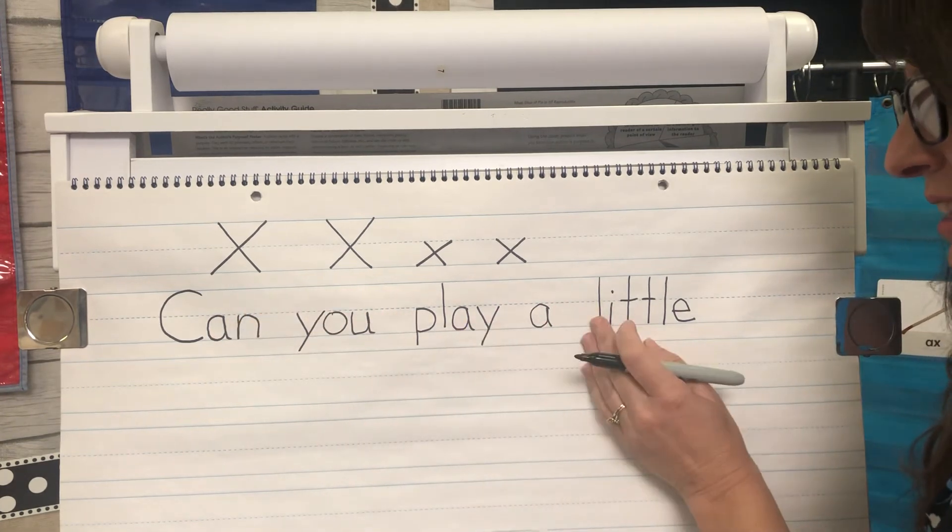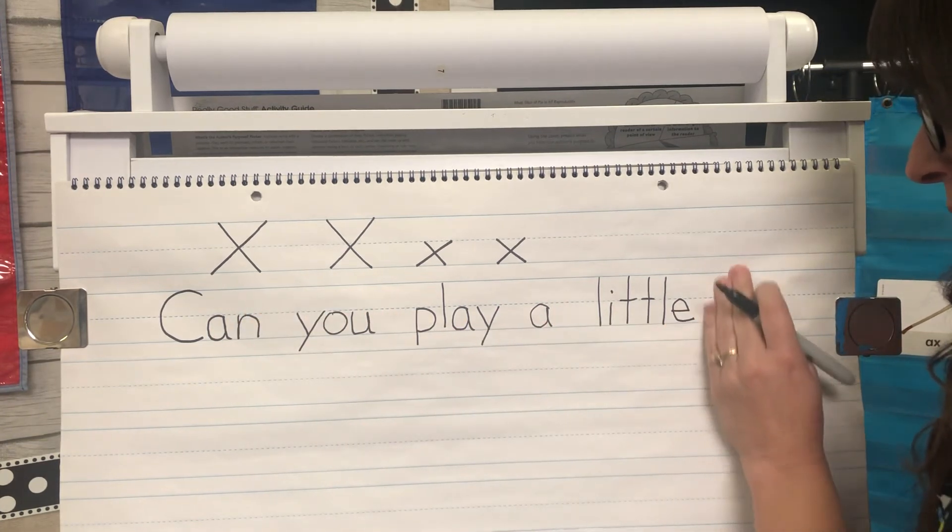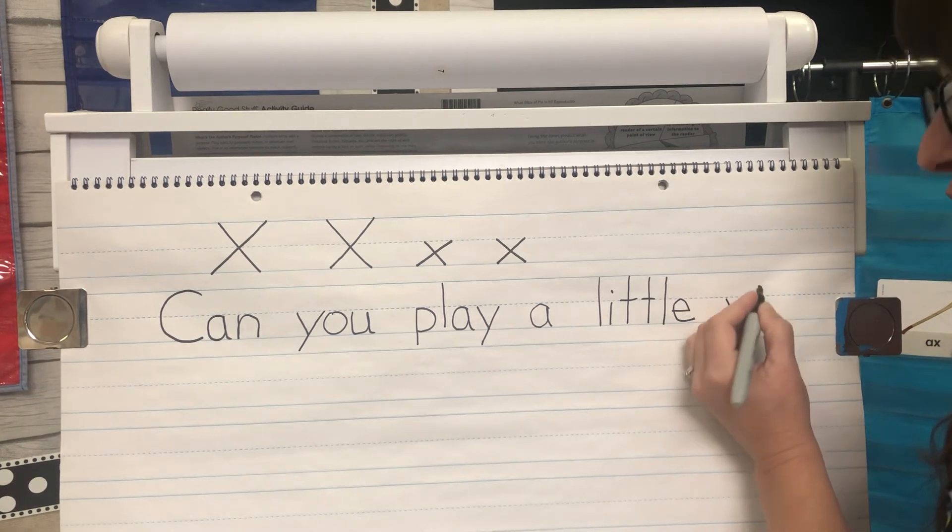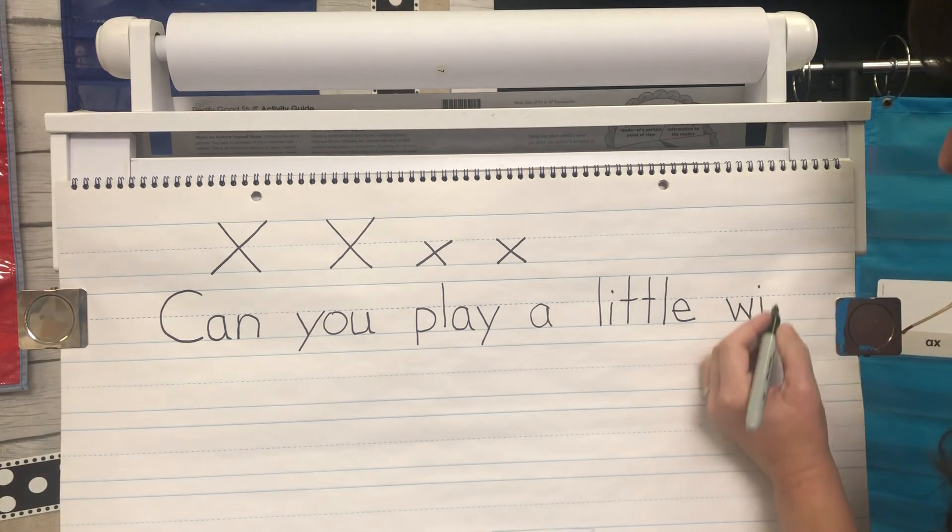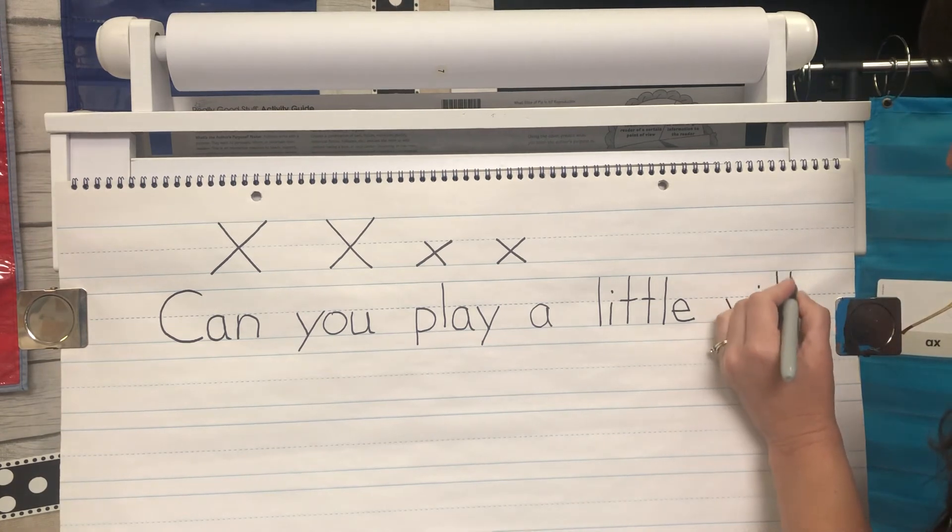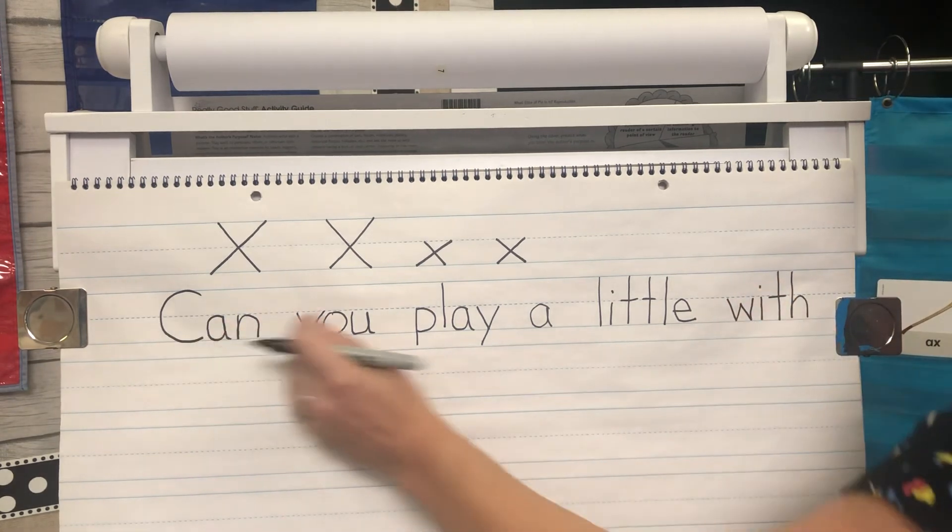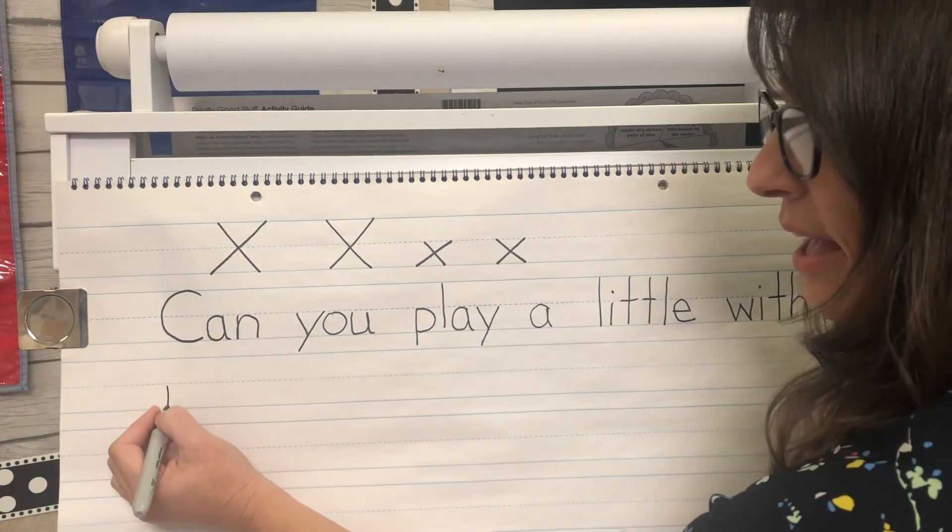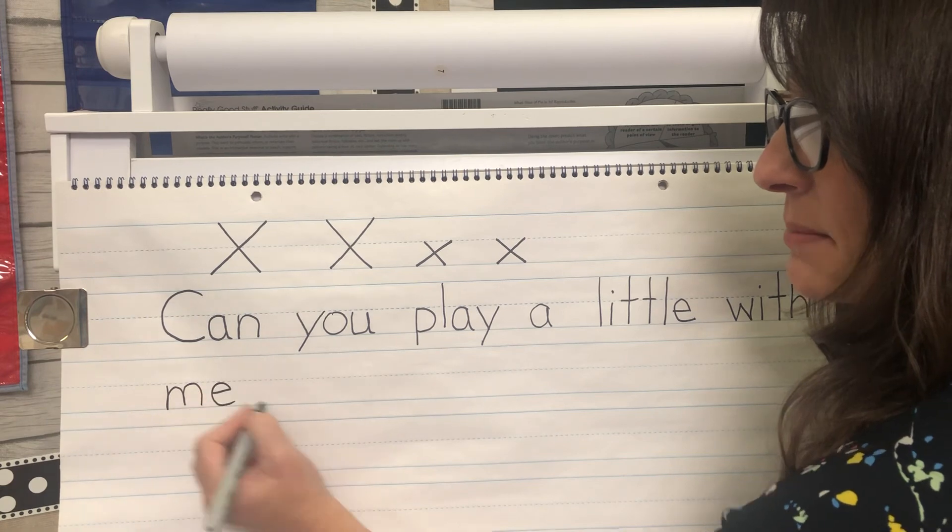Can you play a little space with W. That's been a sight word by the way. W I T H. It's T H. Stick your tongue out with. Can you play a little with me? M E spells me.